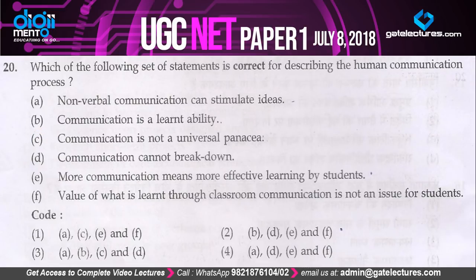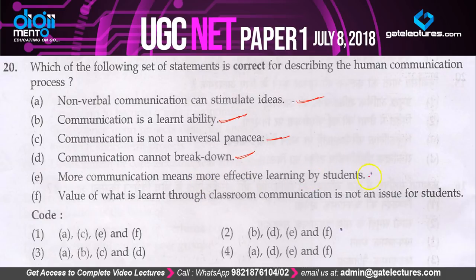Question 20: which set of statements is correct for describing the human communication process? Non-verbal communication can stimulate ideas — correct. Communication is a learnt ability — correct. Communication cannot break down — correct. More communication does not mean more effective learning by students — this is wrong; only planned or effective communication may result in that. Value of what is learned through classroom communication is not an issue for students — absolutely wrong. So the correct options are A, B, C, and D — answer is option 3.